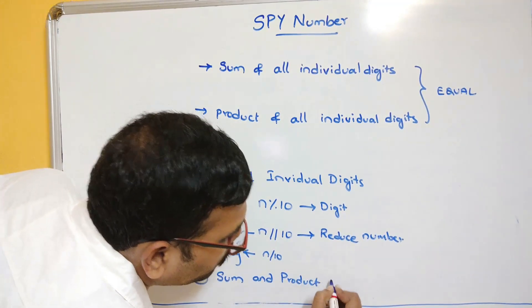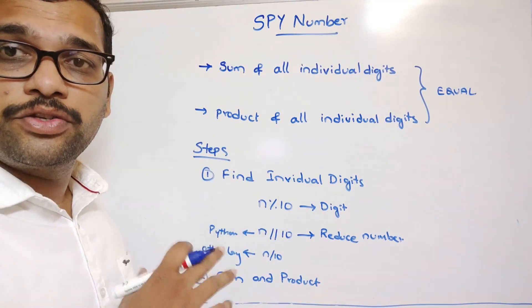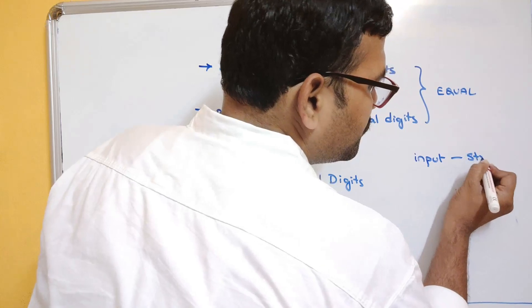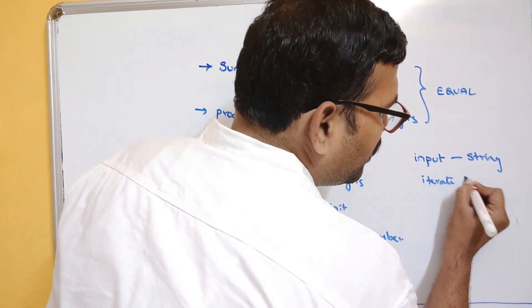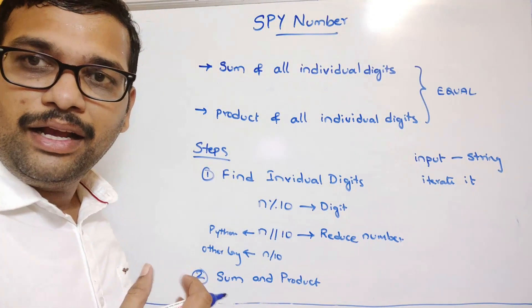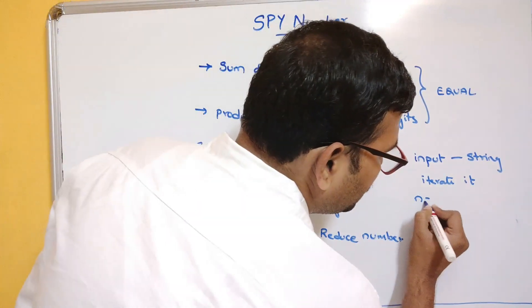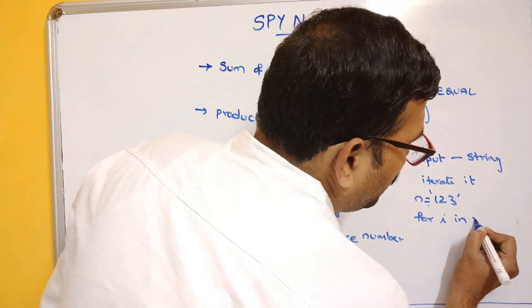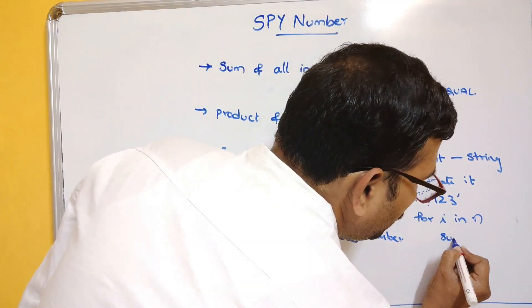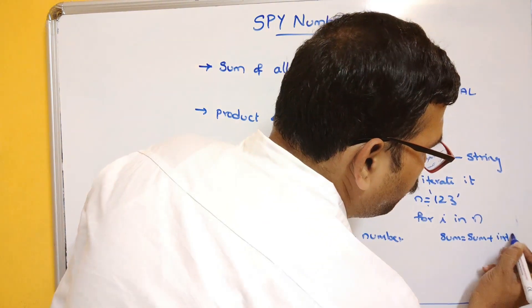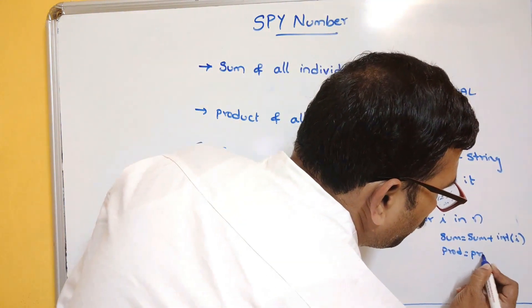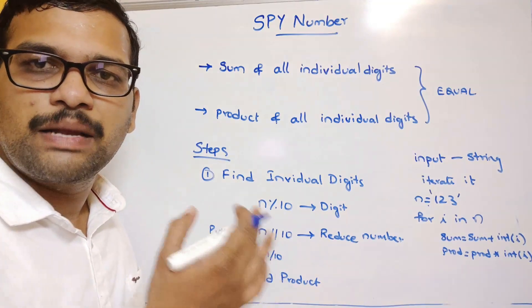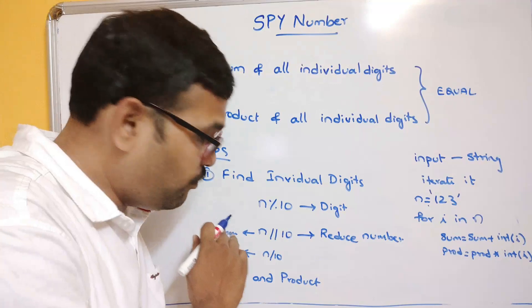One more way to find a spy number is to take the input as a string and iterate it to get individual digits. For example, n = '123' as a string — then 'for i in n', do: sum = sum + int(i), and product = product * int(i). This way we can get the sum and product without using the mod operator or floor division.